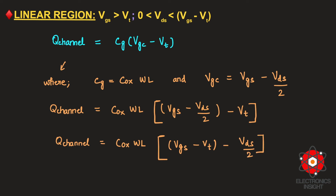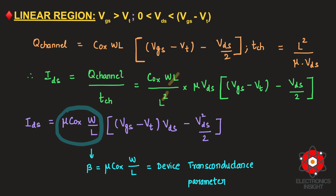Substituting Q_channel and T_CH into the IDS equation and canceling common terms (channel length L), the final linear region equation becomes: IDS = μ × Cox × (W/L) × [(VGS − VT) × VDS − VDS²/2]. The term μ × Cox × (W/L) is the device transconductance parameter β, so this can also be written as IDS = β × [(VGS − VT) × VDS − VDS²/2].